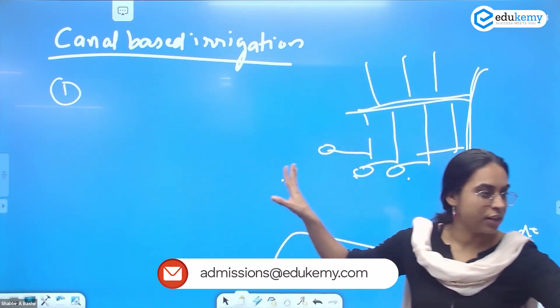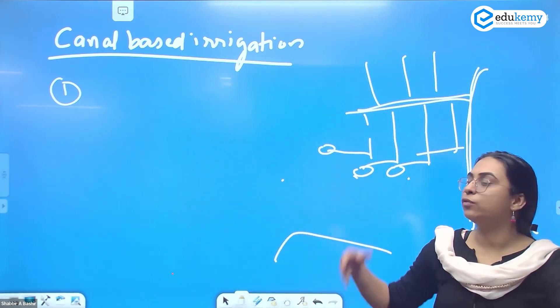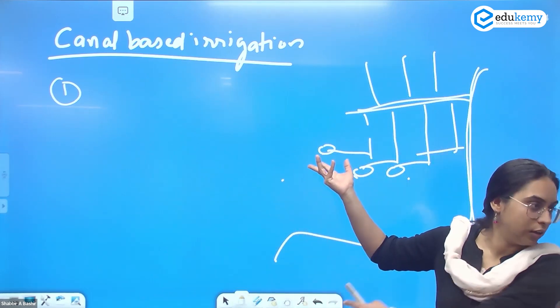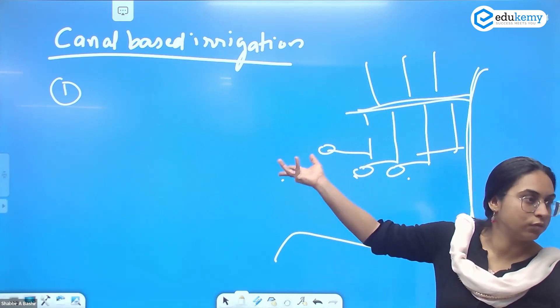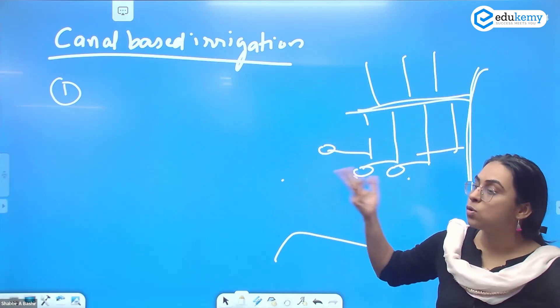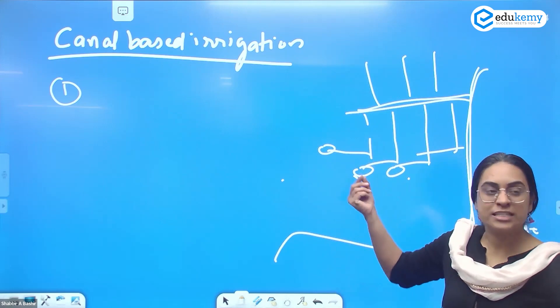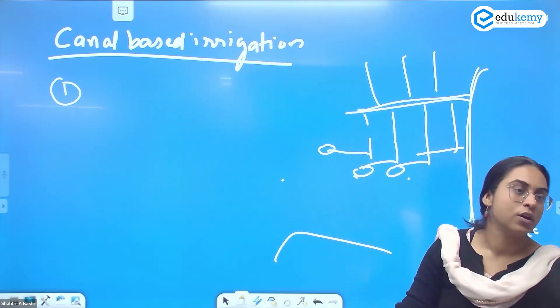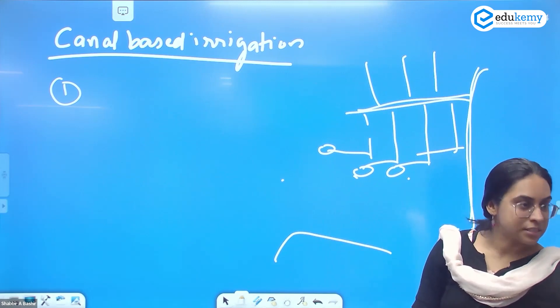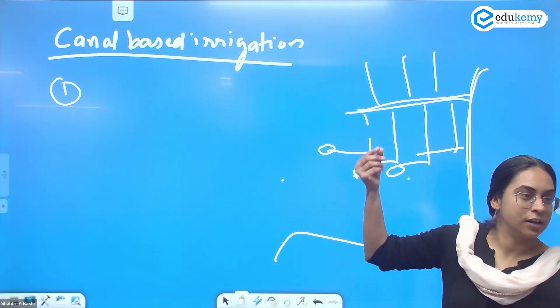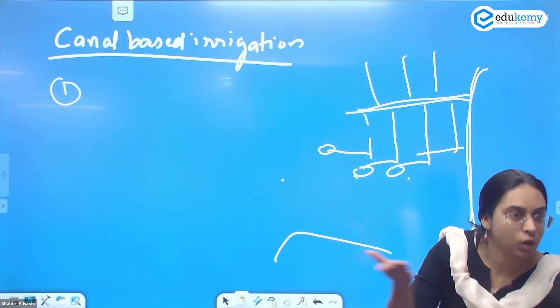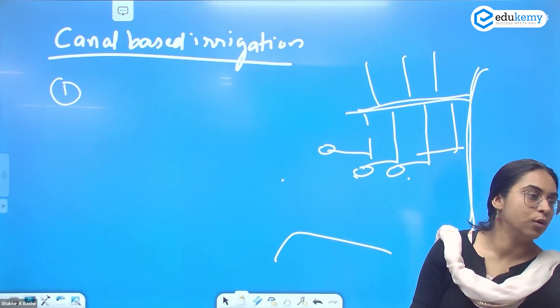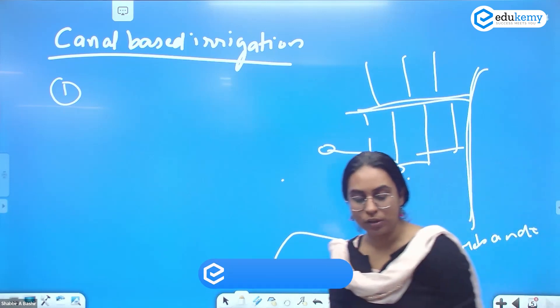What are the merits and demerits? One demerit is the last person does not get it because of the centralized method. Also, if there is continuous seepage of the water from the canal, that leads to problems of soil salinization. This has been seen in Rajasthan. If the canal is not maintained properly, it leads to soil salinization and other issues.